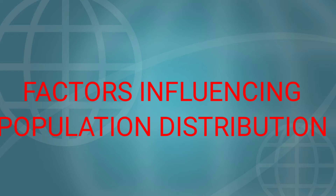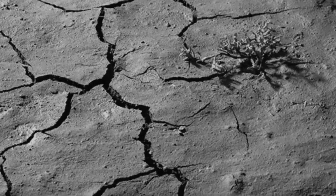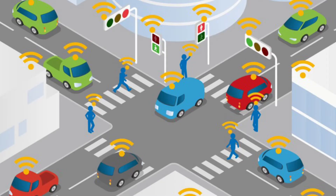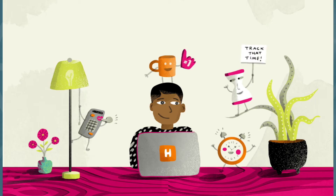Next, we come to the major factors influencing population distribution. Population distribution is not equal all over the world due to certain factors. Population distribution is influenced by many geographical factors, among them climate, topography, soil, power, mineral resources, transport system, and socio-economic conditions are worth mentioning.